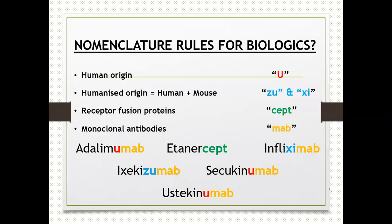There are rules in biologic names worth remembering. If a biologic is totally of human origin, the word 'u' is added in the name. If it is of mixed human and mouse origin, 'zu' or 'z' is added. If it is a receptor fusion protein, that will be indicated at the end of the word. Monoclonal antibodies — which most biologics nowadays are — carry 'mab' at the end. For example, adalimumab means it is a humanized-origin monoclonal antibody.